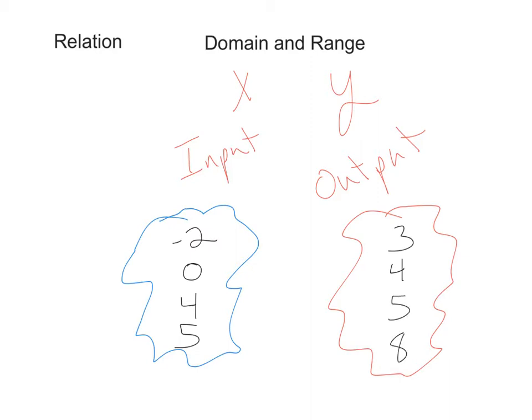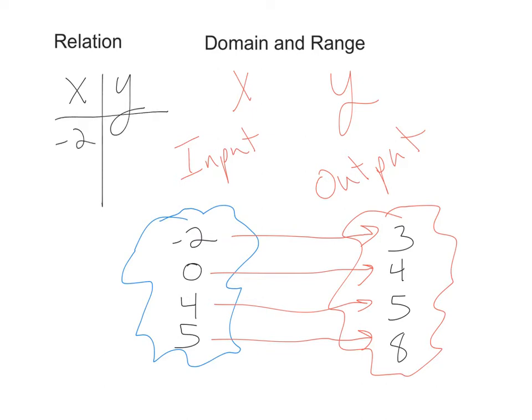So a normal relation looks like this. Some number in the domain goes to some number in the range. That's a relationship, a relation. So when I have a domain of negative 2, that relates directly to the range or output or y value of 3. Up to now, we've often written these in this sort of format where we have x, y as an input-output chart, and we'd write negative 2, 3, 0, 4, so on and so forth.